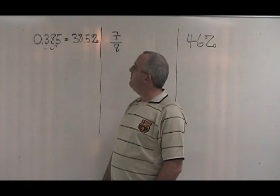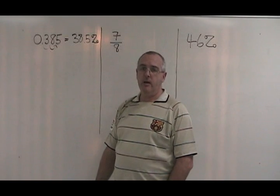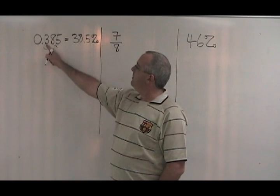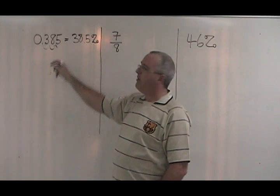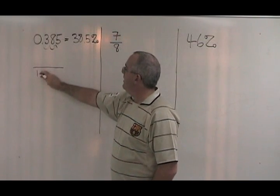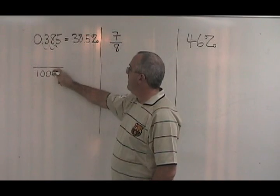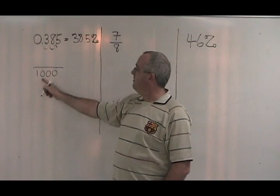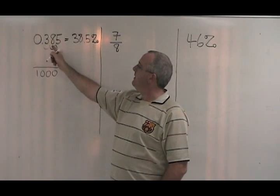To convert 0.385 to a fraction, we start by counting how many digits we have after our decimal. There are three. So we put a fraction line and we put a thousand underneath it. We put a multiple of 10 that has three zeros, one for each of these digits.